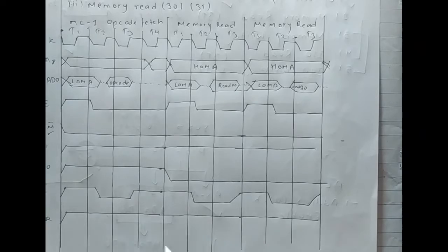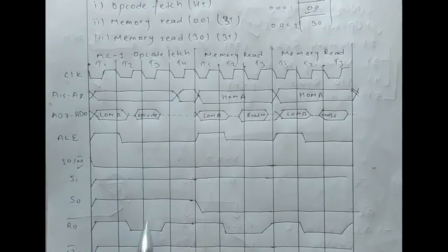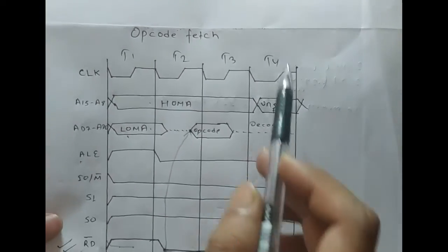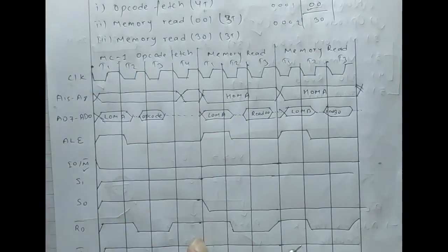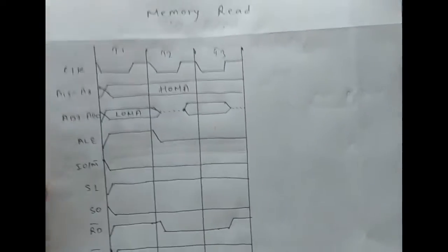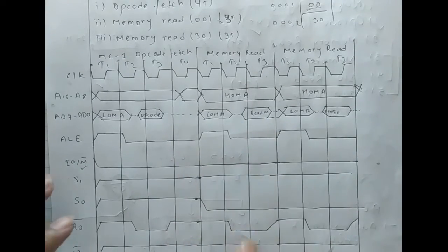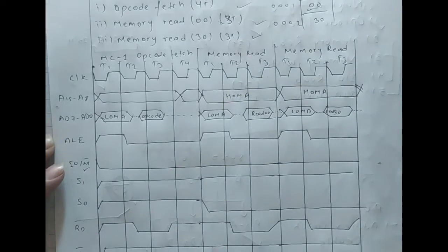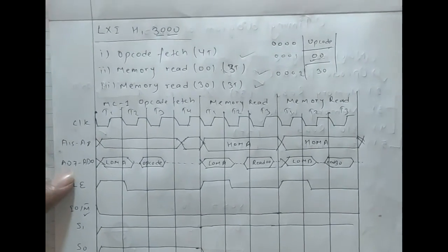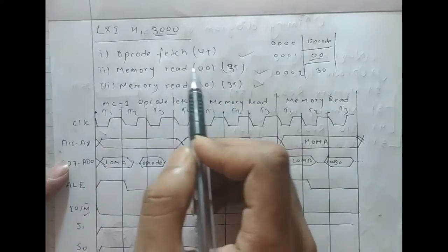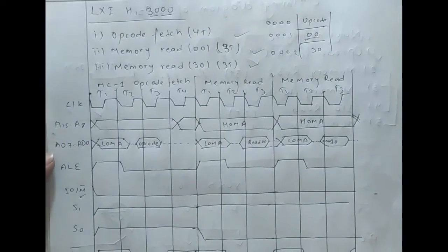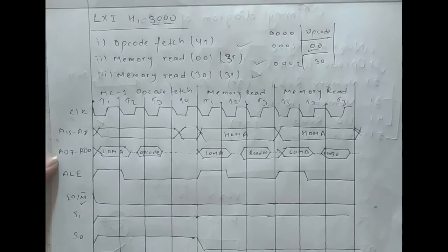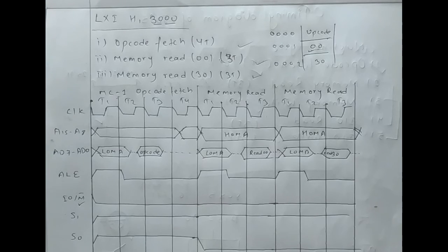This is the timing diagram for LXI B, 3000H. You can verify this — the opcode fetch timing diagram is the same as taught earlier, and the memory read timing diagram is copied for the second and third machine cycles. For any instruction, if you know when to fetch, when to read, and when to write, you can draw the timing diagram easily. In the next video I'll teach about instructions and their machine cycles. That's it for today — I hope you liked this video. Please don't forget to like, comment, share, and subscribe. Thank you.